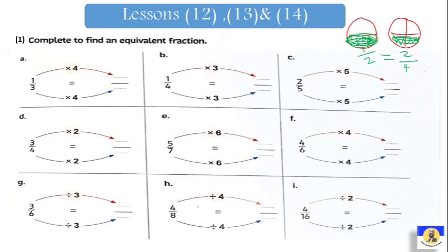One over two and two over four are the same fraction. If we want to find the relation between one over two and two over four — notice that both are made by multiplying up and down by two: one by two equals two, and two by two equals four. So equivalent fraction means the same thing is there, but we cut it into more parts, using multiplication or division by the same number.